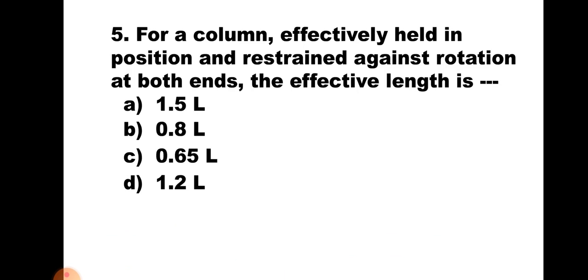Question number 5. For a column effectively held in position and restrained against rotation at both ends, the effective length is: A) 1.5L, B) 0.8L, C) 0.65L, or D) 1.2L. This means the column is fixed at both ends. Hence the correct value of effective length is 0.65L, and the correct answer is C, 0.65L.